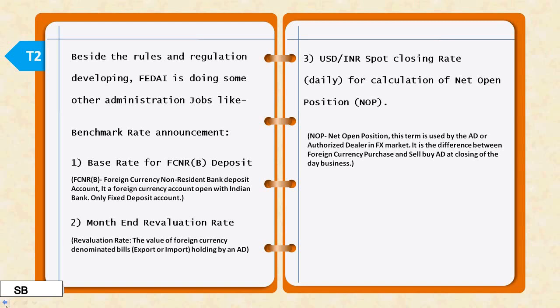Authorized dealers do various transactions throughout the day — some purchase transactions and some sale transactions, meaning they buy and sell foreign exchange. At the end of the day when the market closes, the difference between the total day's buy and sell is called the open position. To convert this open position calculation into Indian rupees, FEDI declares the required rate every evening.